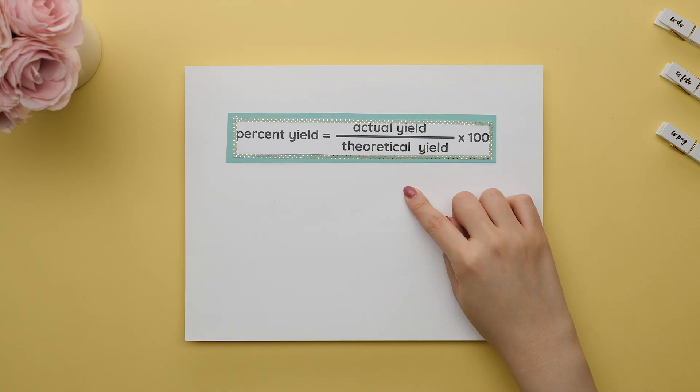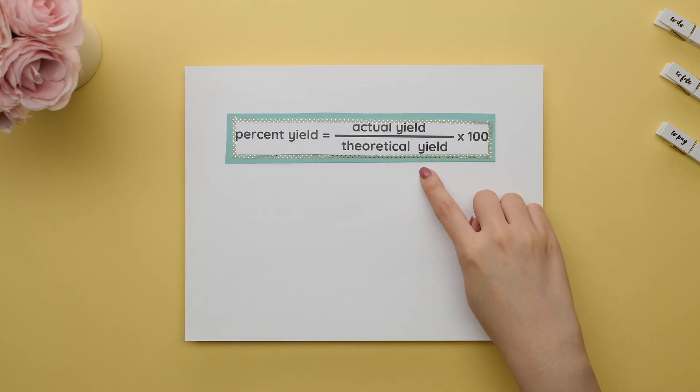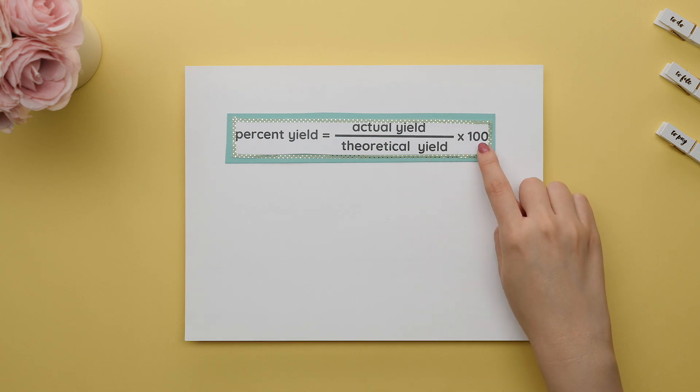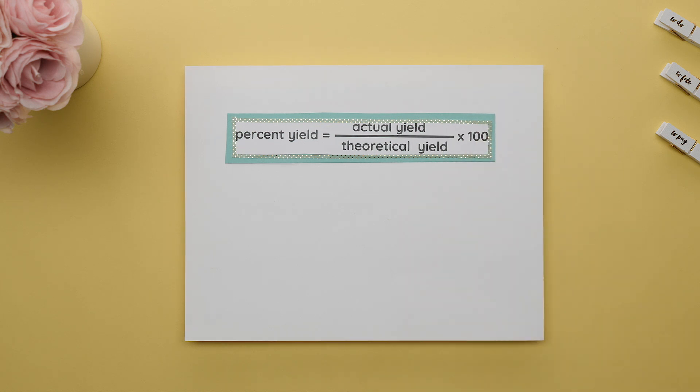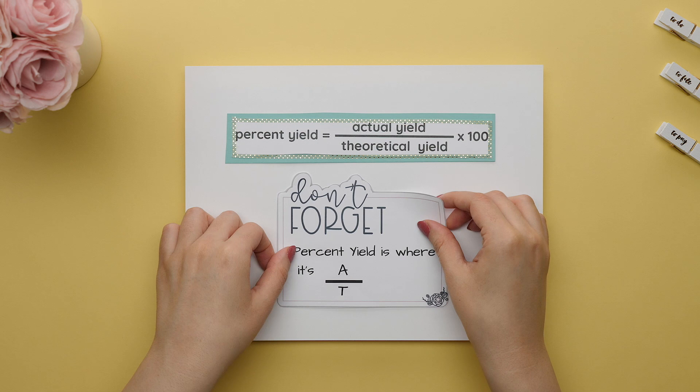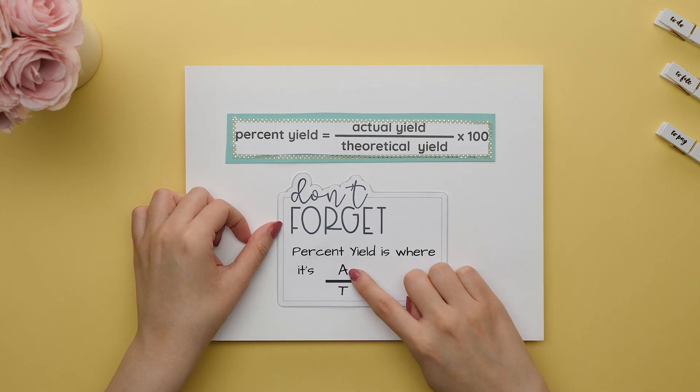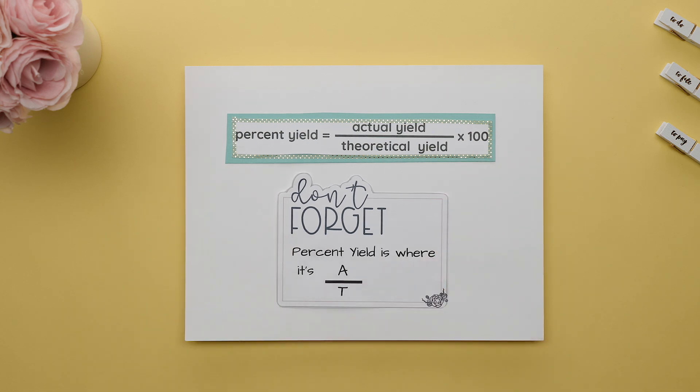Another chemistry topic where you will use percentages is finding the percent yield of a reaction. You will use percent yield a lot, especially in lab reports, so get familiar with this formula. The formula for percent yield is the actual yield divided by the theoretical yield, all multiplied by 100. An easy way to remember this is: percent yield is where it's at — dorky, yes, but you probably won't forget it now.